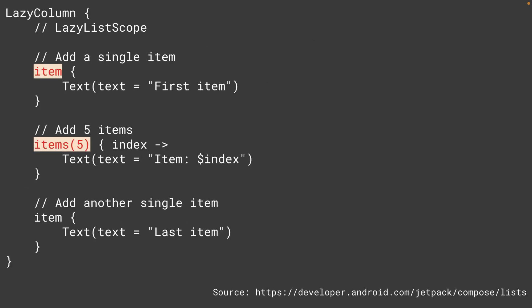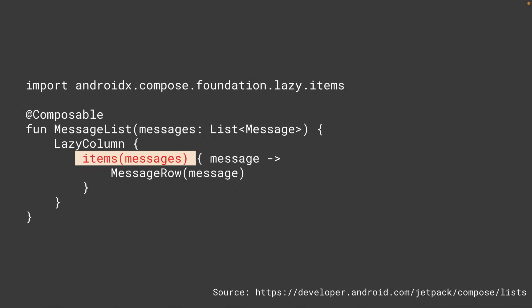Lazy components like lazy row and lazy column provide a lazy list scope block. The DSL of lazy list scope provides a number of functions for describing items in the layout. The function item adds a single item like a header or a footer. The function items adds multiple items. You can also add a collection of items such as a list or array using the items function. There is also a variant called items indexed which provides the index.